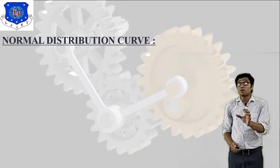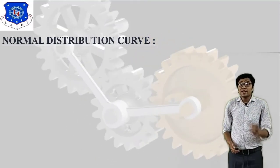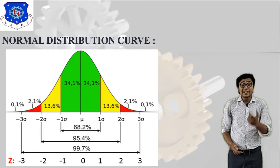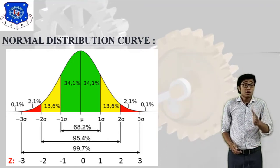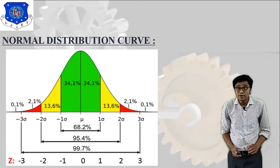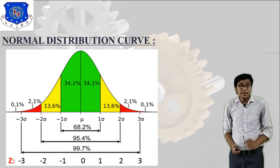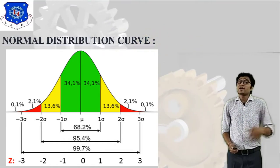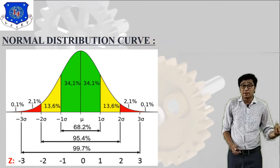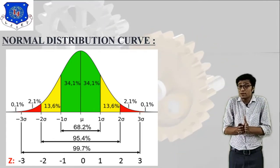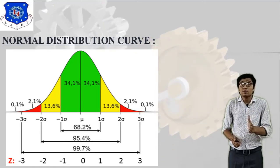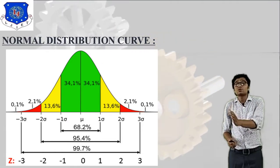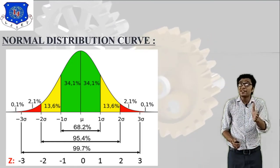The first important question is: what do you understand by a normal distribution curve? Basically, it is like a bell curve. As you can see in the image, the normal distribution curve is symmetrical at the center, where mu is the center line. From there we have plus one sigma, two sigma, and three sigma on the right, and minus one sigma, minus two sigma, and minus three sigma on the left — which is the six sigma concept.